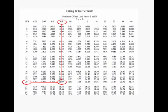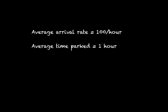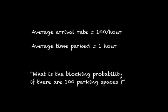So let's go back to the parking lot. We have the average arrival rate was 100 per hour, and the average time parked is 1 hour. The question was, what is the blocking probability if there are 100 parking spaces? So let's now assume that the cars arrive following a Poisson process, and the time parked is negative exponentially distributed.